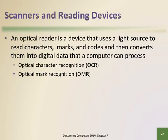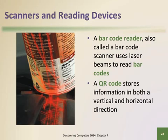Character recognition uses an optical reader to read typewritten, computer-printed, or hand-printed characters from ordinary documents and translate the images into a form the computer can process. A barcode reader uses laser beams to read barcodes. Manufacturers print a barcode either on a product's package or on a label affixed to the product. The barcode represents data that identifies the manufacturer and the item.